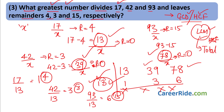Question 4: What least number, when divided by 36, 24 and 16, leaves 11 as remainder in each case? The word 'least' appears in LCM, so we need to find LCM. Find LCM of 36, 24 and 16. All are divisible by 4: 4×9=36, 4×6=24, 4×4=16. 9 and 6 are divisible by 3: write 3, 2 and keep 4 as it is. Then 2 and 4 are divisible by 2: write 1, 2 and keep 3 as it is. We stop when nothing more is divisible. LCM = 4×3×2×3×2 = 144.